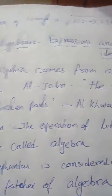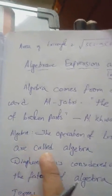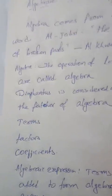To recap: algebra comes from the Arabic word meaning 'the reunion of broken parts.' Al-Khwarizmi gave this term and is an Arabic mathematician. Algebra means the operation of literals. Diophantus is considered the father of algebra. We need to learn about terms, factors, and coefficients.